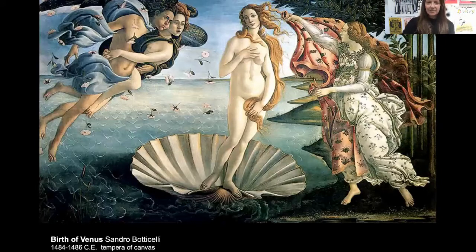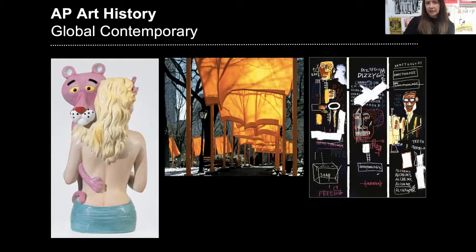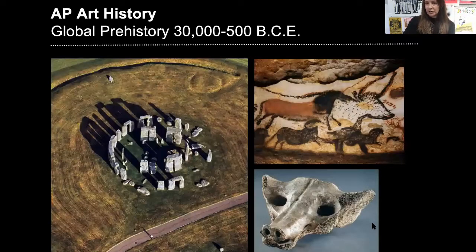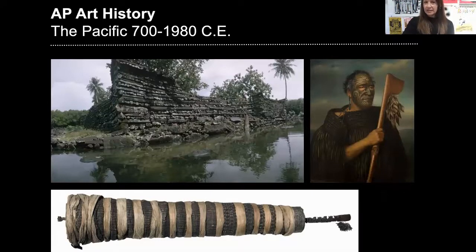Here we have our Birth of Venus that we looked at. To look at some of the global content areas — this is where we're starting, with global contemporary. The two artists in the middle and the one on the right are artists we've already covered, and we'll be getting to Jeff Koons, the artwork on the left. Shortly we're going to jump into global prehistory and look at Stonehenge and the Lascaux cave paintings. Everything made in prehistory was made for a function — it had a purpose, not just hanging on a wall. These were objects used every single day.